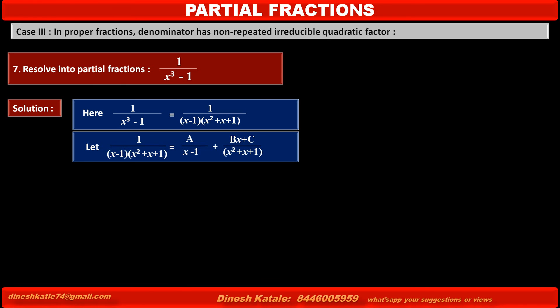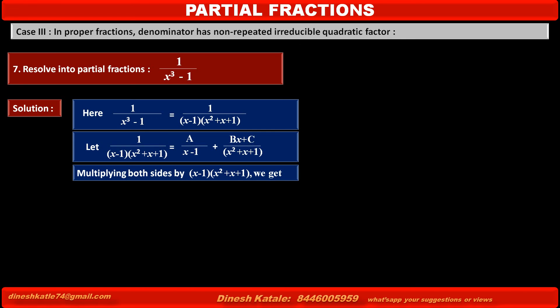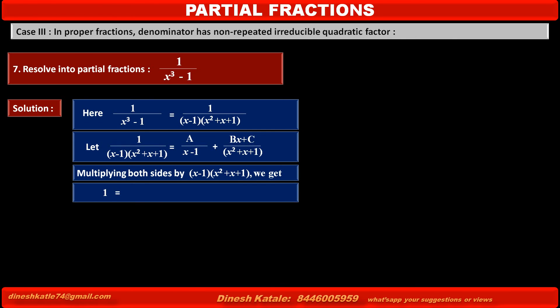To remove the denominators of each term, multiply both sides by their LCM, that is (x minus 1)(x squared plus x plus 1). Then the left-hand side becomes 1, equal to A(x squared plus x plus 1) plus (Bx plus C)(x minus 1). Consider this as equation 1.